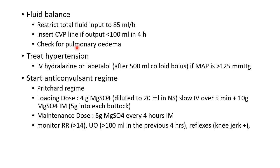Fluid balance should be maintained, with total fluid input restricted to 85 mL per hour. A central venous pressure line should be inserted if output is less than 100 mL in four hours, and pulmonary edema should be checked. Hypertension should be treated with IV hydralazine or IV labetalol after a 500 mL colloid bolus. The Pritchard regime is commonly used for anticonvulsant therapy: a loading dose of 4 g magnesium sulfate IV over 5 minutes, plus 10 g intramuscularly (5 g into each buttock), followed by a maintenance dose of 5 g magnesium sulfate every four hours IM. Before each maintenance dose, monitor respiratory rate (>14/min), urine output (>100 mL in previous 4 hours), and knee jerk reflex.